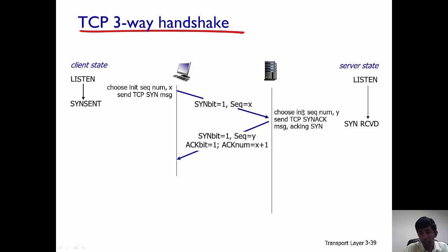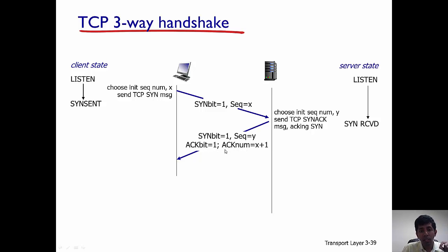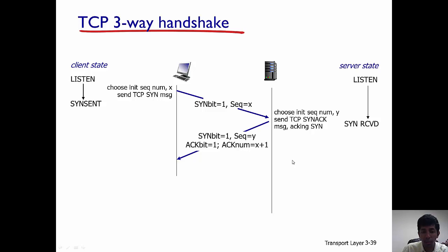The server now acknowledges this. In the segment it sends back to the client, it sets the SYN bit equal to one, chooses a new sequence number equal to Y, and sets the acknowledgement bit equal to one with an acknowledgement number equal to X plus one — because the sequence number received from the client was X.